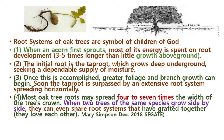Roots are spreading three to four times larger than the branch system. Number two: the initial root is the tap root, which grows deep underground seeking a dependable supply of moisture. Number three: once this is accomplished, greater foliage and branch growth can begin. Soon, the tap root is surpassed by an extensive root system spreading horizontally.